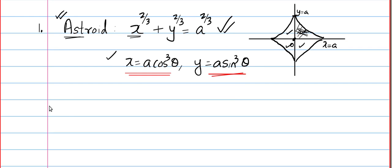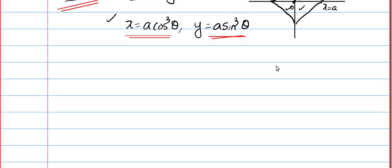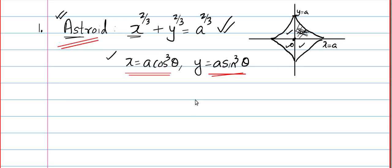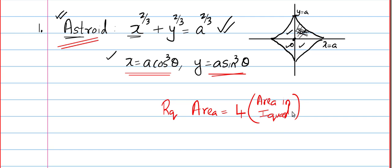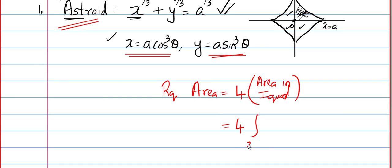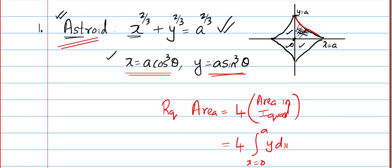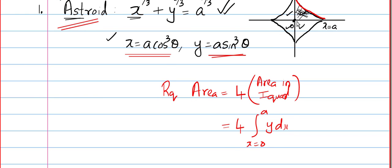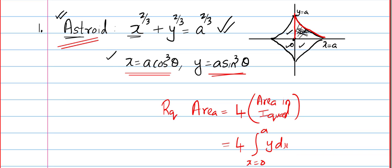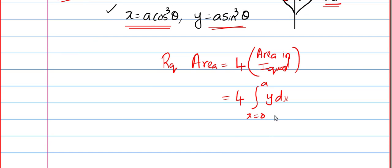So, the first question: find the area of the asteroid. You draw a rough picture, and the total area equals 4 times the area in the first quadrant. That gives us 4 × integral from x = 0 to a of y dx. The curve is above the x-axis in the first quadrant, so we use integral y dx. The limits are x = 0 at the origin and x = a at the boundary.